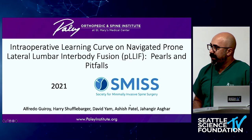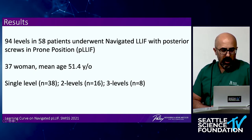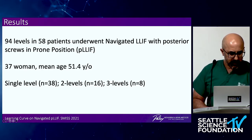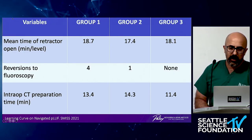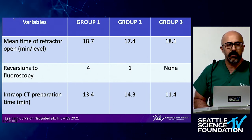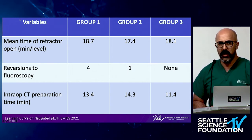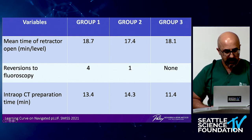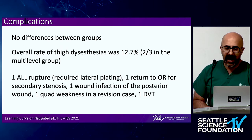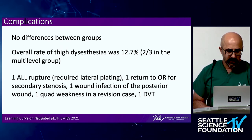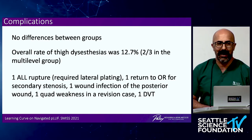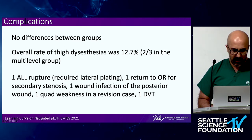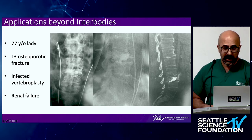Looking at my intraoperative learning curve data — presented at ESMISS — 94 levels in 58 patients, now over 140 levels. My mean retractor time has been about 17 minutes. Because I do a high volume of revision TLIFs, I need to separate primary versus revision retractor times, which isn't shown here. We found no difference between groups. I had one aortic injury requiring plating, and one quad weakness in a congenital revision case — a patient selection issue more than a technical one — who went on to recover well.